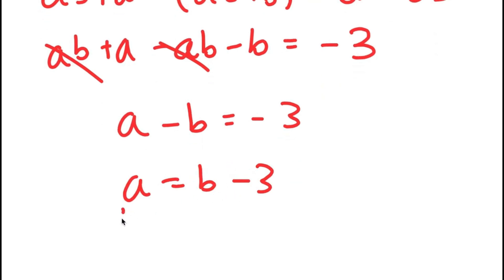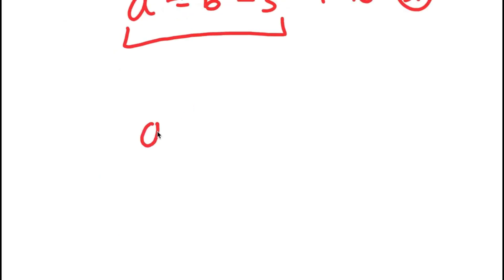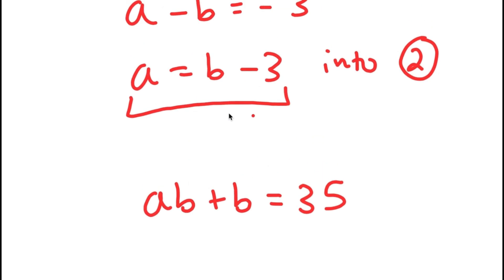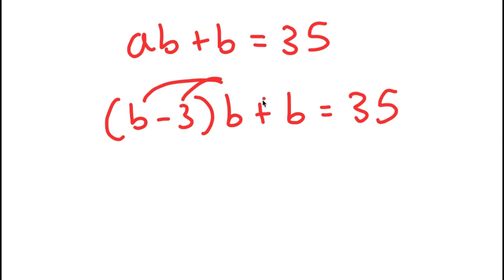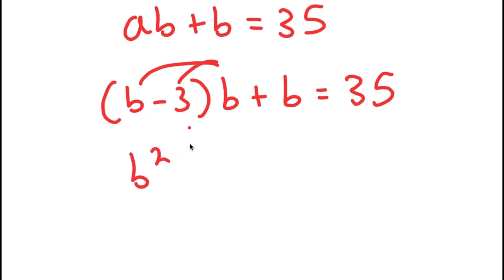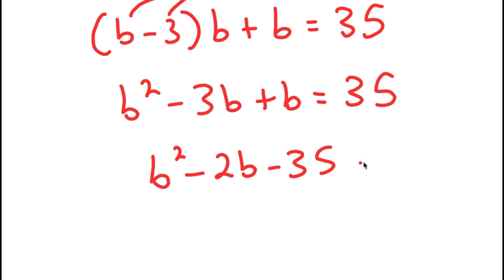Now I can substitute this value of A into equation number 2. Equation number 2 is AB plus B equals 35. Now that I have A in terms of B, I can plug this in. So I get (B minus 3) times B plus B equals 35. My only variable in this equation is B, so we can solve this. Distributing B: B times B is B squared and B times negative 3 is negative 3B. Plus B equals 35. And negative 3B plus B equals negative 2B. If I subtract 35 on both sides, I get B squared minus 2B minus 35 equals 0.